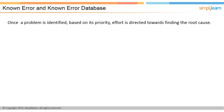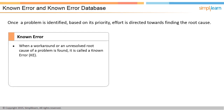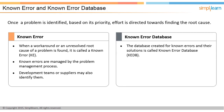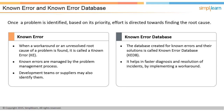In the next screen, let us discuss known errors and the known error database. Once a problem is identified, based on its priority, effort is directed towards finding the root cause. A temporary fix or workaround might be used to restore services to a usable level in the meantime. The moment a workaround or an unresolved root cause to the problem is found, it becomes a known error and IT services are aware of the issue. Known errors are managed throughout their lifecycle with the problem management process. Development teams or suppliers may also identify known errors — for example, application incompatibility reports for Windows by Microsoft. A database created for known errors, workarounds, and their solutions is called the known error database, or KEDB. It helps in faster diagnosis and resolution of incidents.